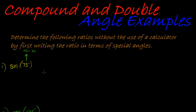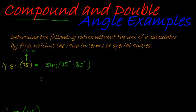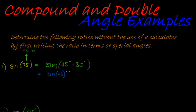45 and 30 degrees are definitely special angles, so I can rewrite this as sine of 45 degrees plus 30 degrees. And this is where my compound angle identities come in, because all I need to do is write this with my compound angle identity, which for sine is: same sine, different ratios. So sine of 45 degrees,